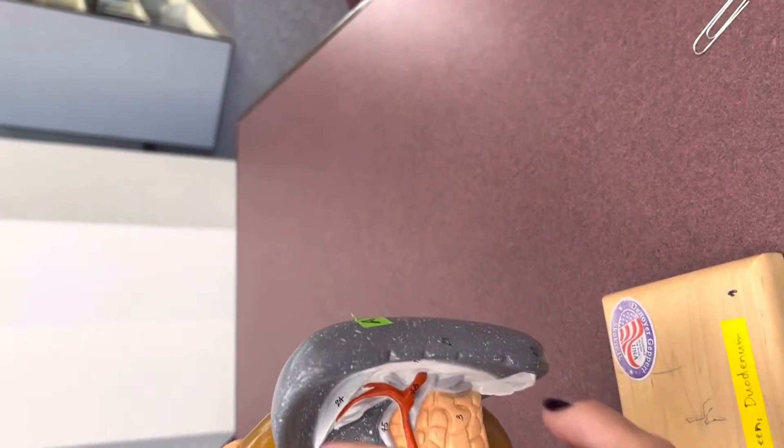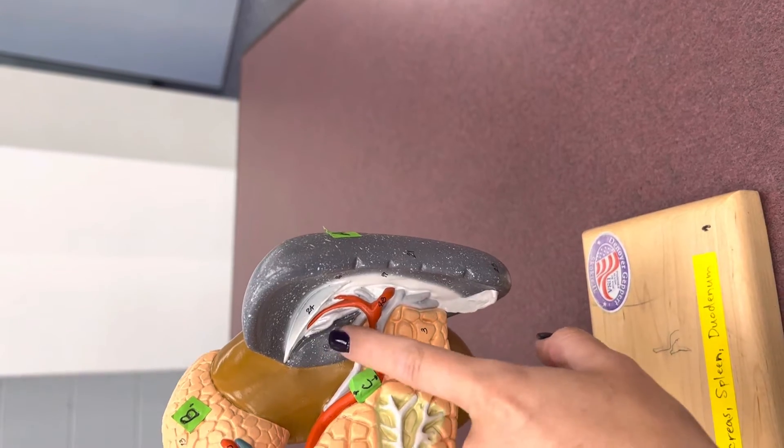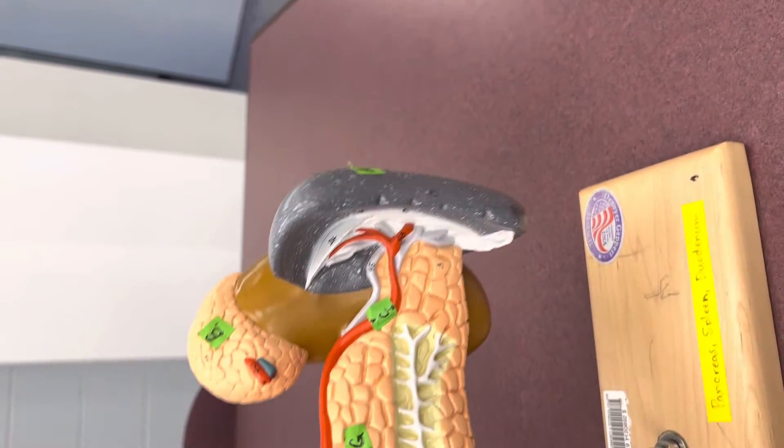C is the splenic artery. Here's the spleen. Remember, this is where red blood cells go to die. The splenic artery goes into the spleen.